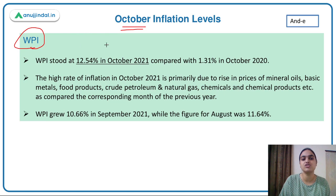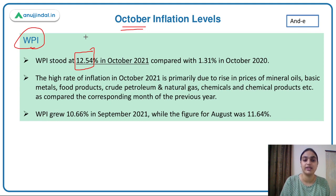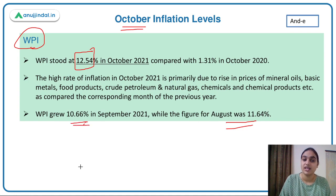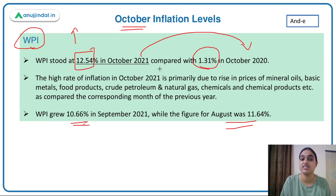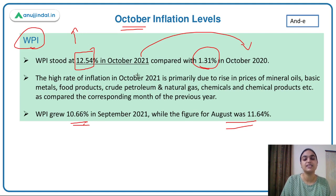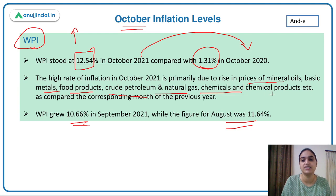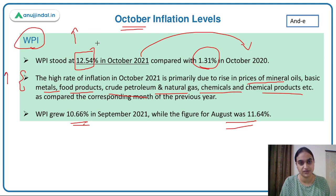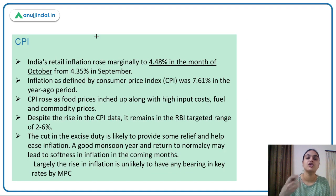Talking about WPI — the Wholesale Price Index, inflation at the wholesale level — it stood at 12.54% in October. In August it was around 11.64%, then it reduced in September to around 10.66%, and now it has again risen to 12.54% in October. Comparing this with October 2020, there has been a drastic rise year-on-year. The rise in WPI is primarily due to rising prices of mineral oils, basic metals, food products, crude petroleum, natural gas, and chemicals.